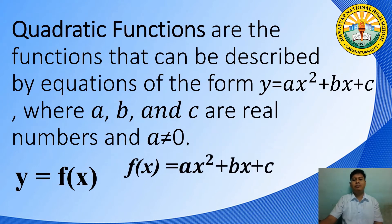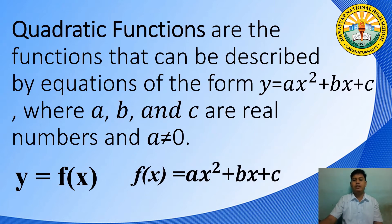Let us define first what a quadratic function is. When we say quadratic function, these are the functions that can be described by the equations of the form y is equal to ax squared plus bx plus c, where a, b and c are real numbers and a is not equal to zero. Please take note that the value of a should not be equal to zero, but the values of b and c can be equal to zero. Remember, when you were in grade 8, your math teacher discussed that y is equal to f of x. Thus, quadratic function may also be written in the form f of x is equal to ax squared plus bx plus c.